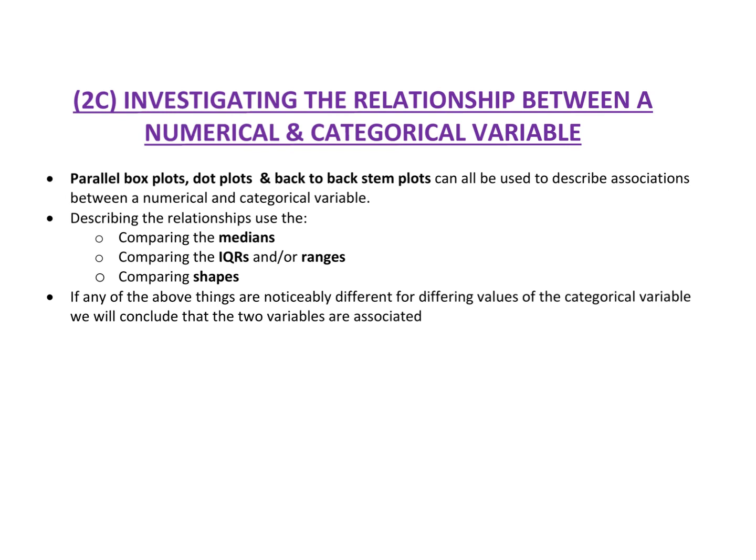When we're comparing them, obviously we're going to have the different categories. So for an example, if we had the parallel box plot, we've got our number line along here, and we might say the heights. So the heights is going to be the numerical, and we might say of all the year 7s, year 8s, year 9s. We would have all these three different box plots. This would be year level, the categorical variable.